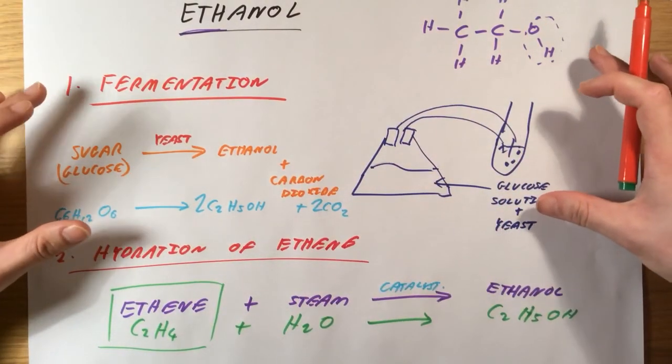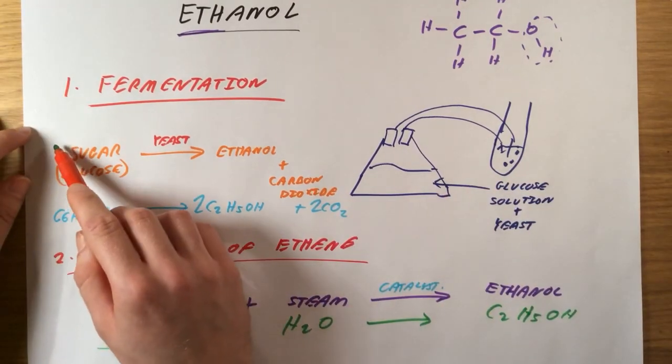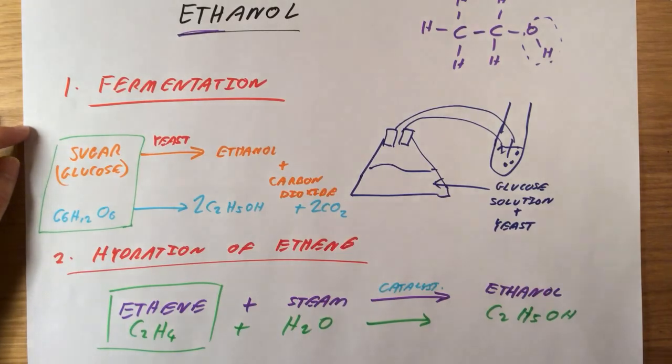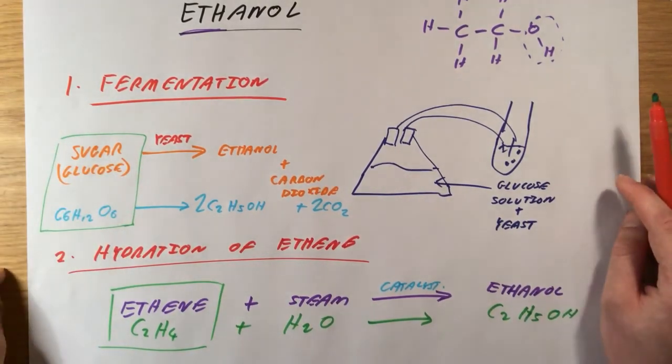Fermentation, which we've been doing for thousands and thousands of years, is renewable because we can just grow more plants, more grapes, more sugarcane, that kind of thing, and use the sugar that's found naturally in those.